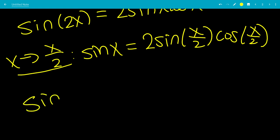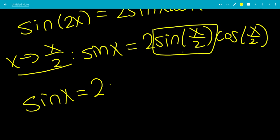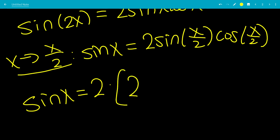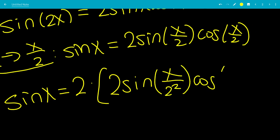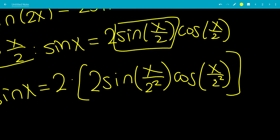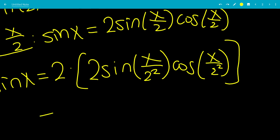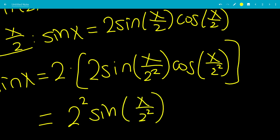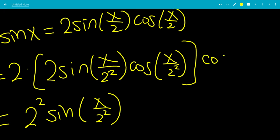Let's do the same thing again. We have 2 times sine of x over 2 — we're going to plug it back into this formula. So this will be 2 times sine of x over 4, or 2 squared, times cosine of x over 2 squared. That comes from plugging in x over 2. So this simplifies to 2 squared times sine of x over 2 squared.